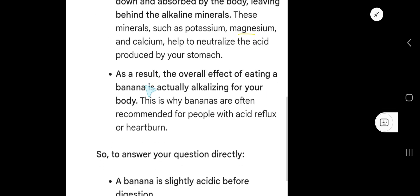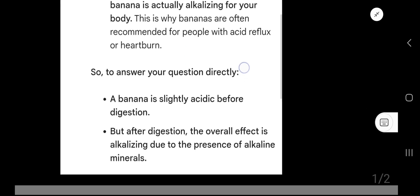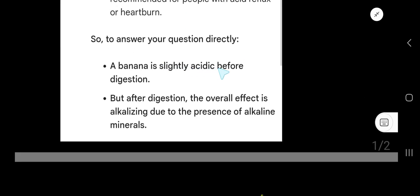As a result, the overall effect of eating a banana is actually alkalizing for your body. This is why bananas are often recommended for people with acid reflux or heartburn. So to answer your question directly: a banana is slightly acidic before digestion, but after digestion, the overall effect is alkalizing due to the presence of alkaline minerals.